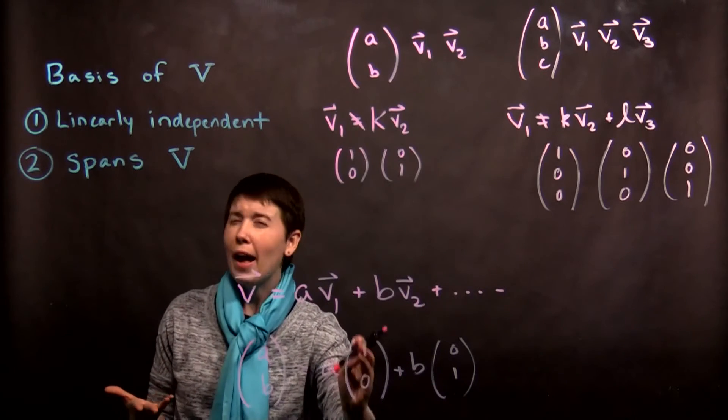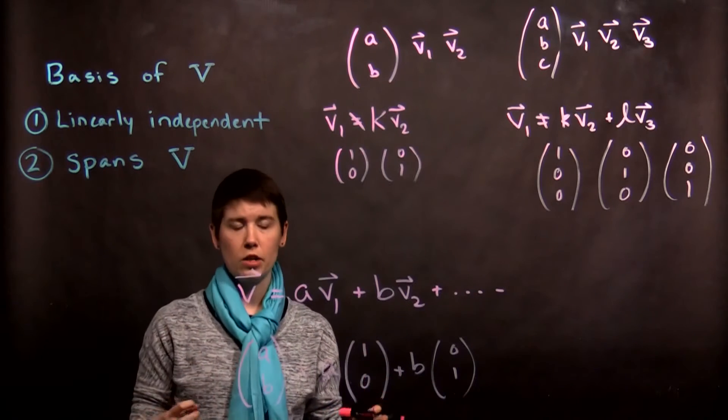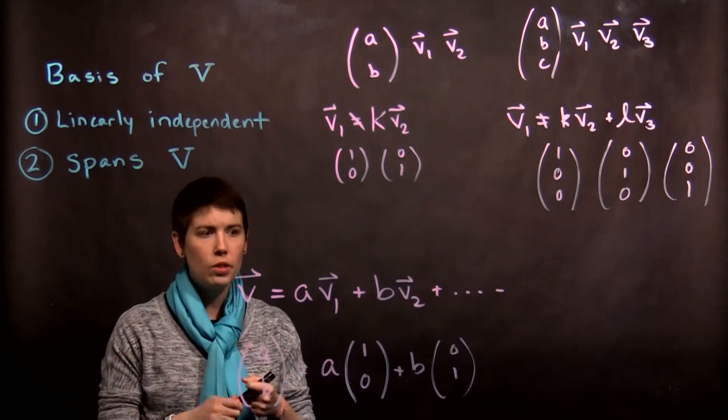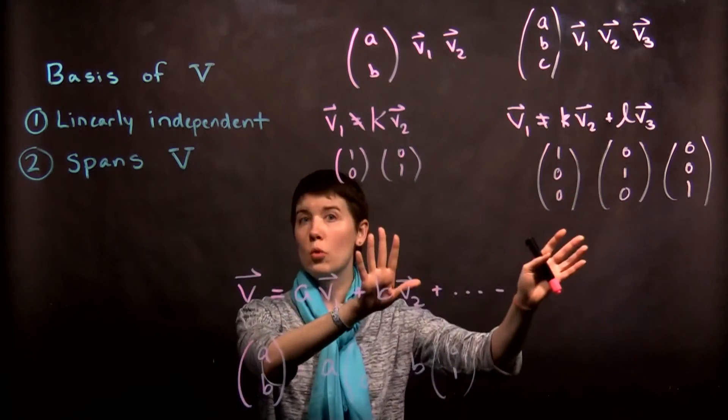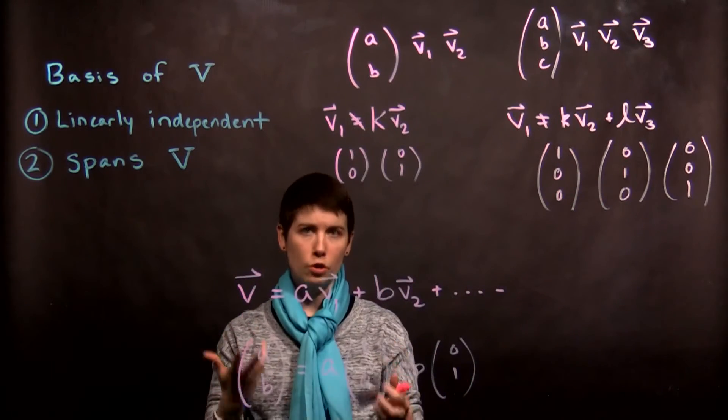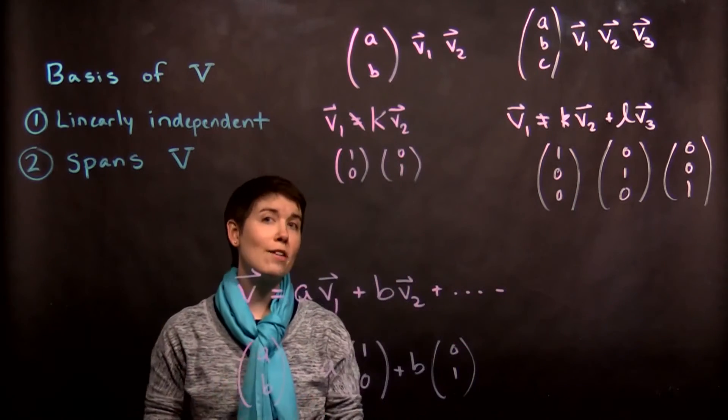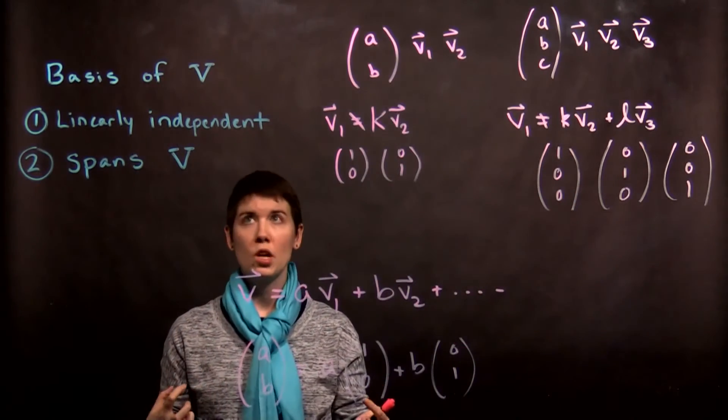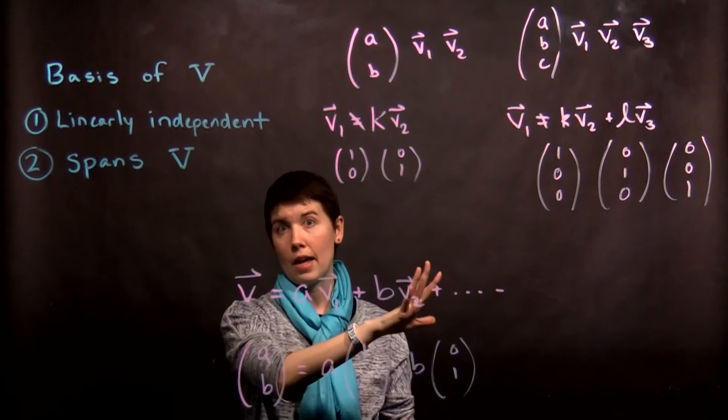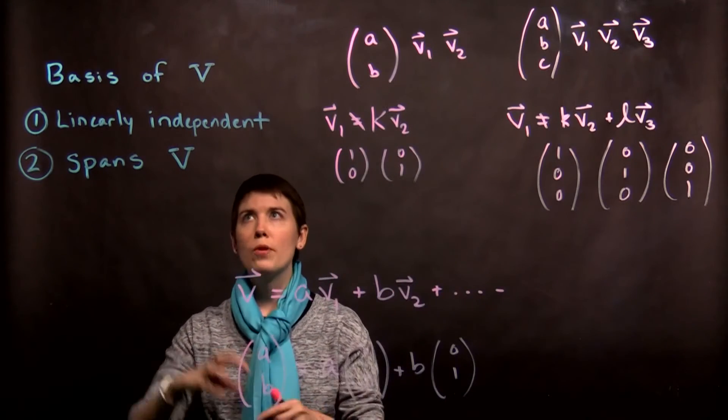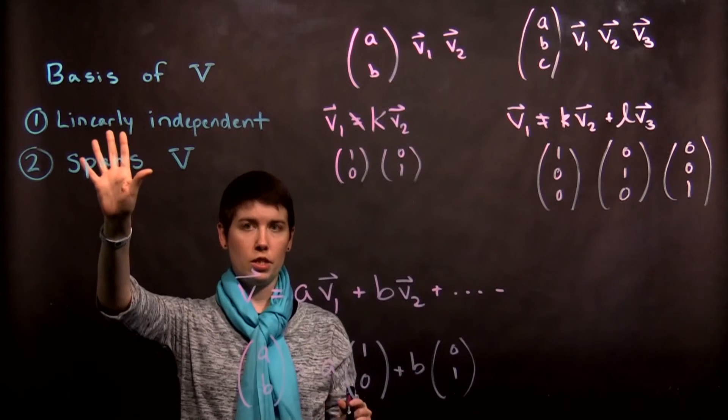But you don't have to use these basis vectors. Something that's key to know is that this is going to be our simplest choice, and there's going to be physical interpretations of using these basis vectors. But you can in fact use other basis vectors. It doesn't have to be this set. But you're always going to have a set of vectors that do this, and you can have more than one.